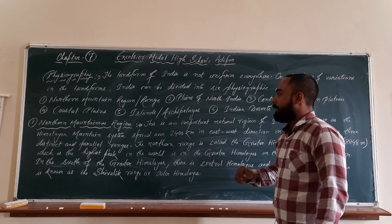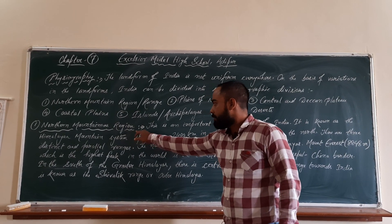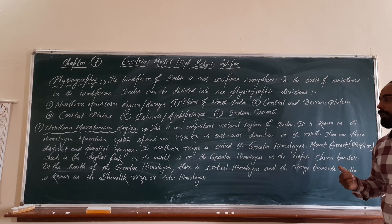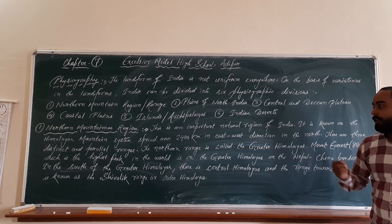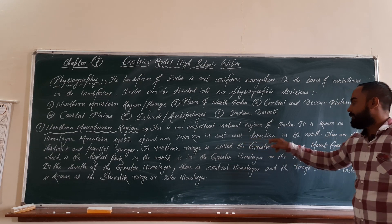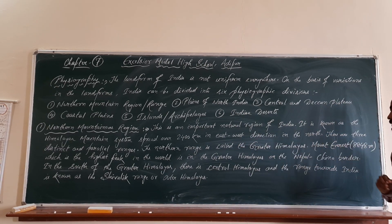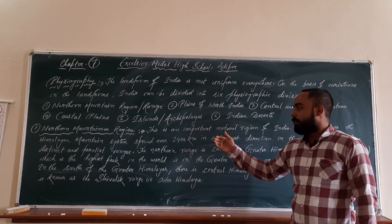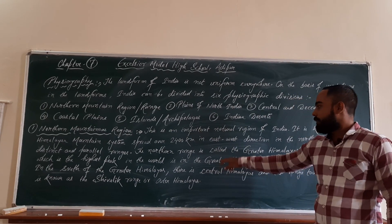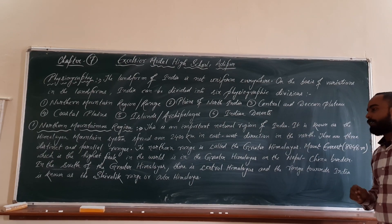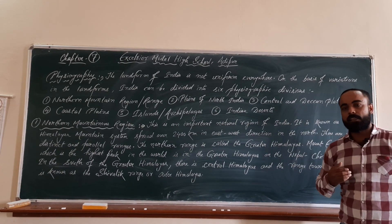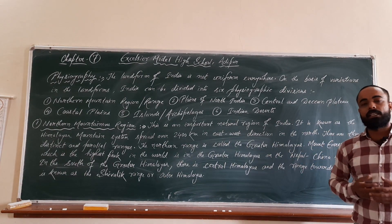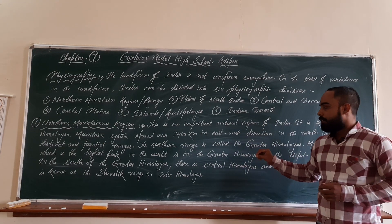So let us get some information about the northern mountainous region. This is an important natural region of India. It is known as the Himalayan mountain system, with an area of 2400 kilometers in the east-west direction in the north. There are three different and parallel ranges found in the northern mountain region. The northern range is called the Greater Himalayas, and as we all know, Mount Everest, which is the highest peak in the world with a height of 8848 meters, is found in this Greater Himalayas.